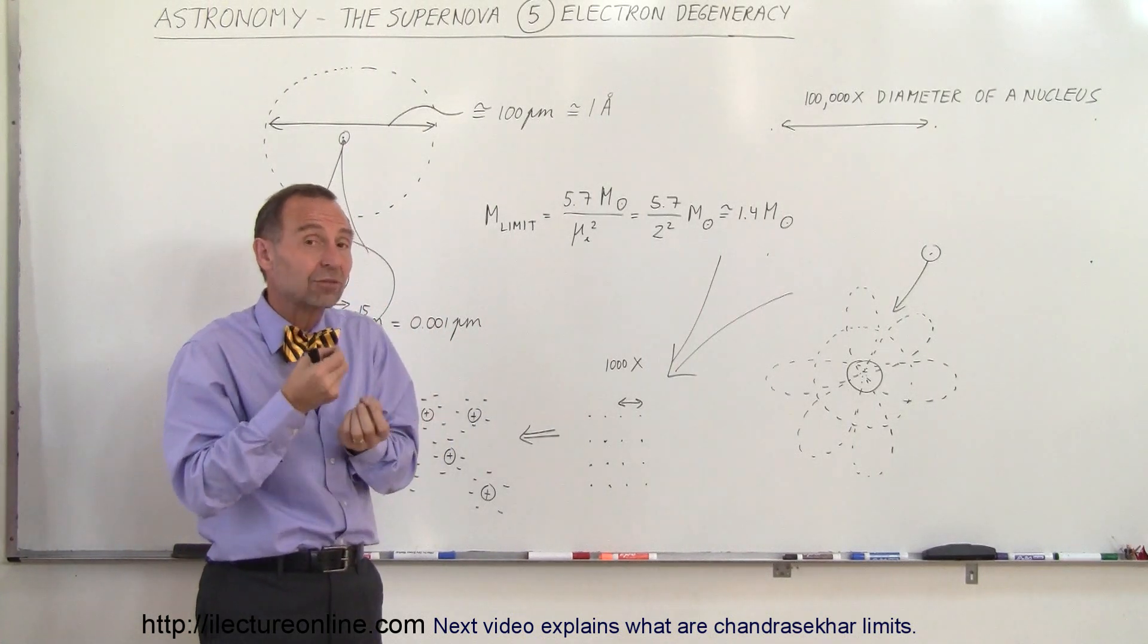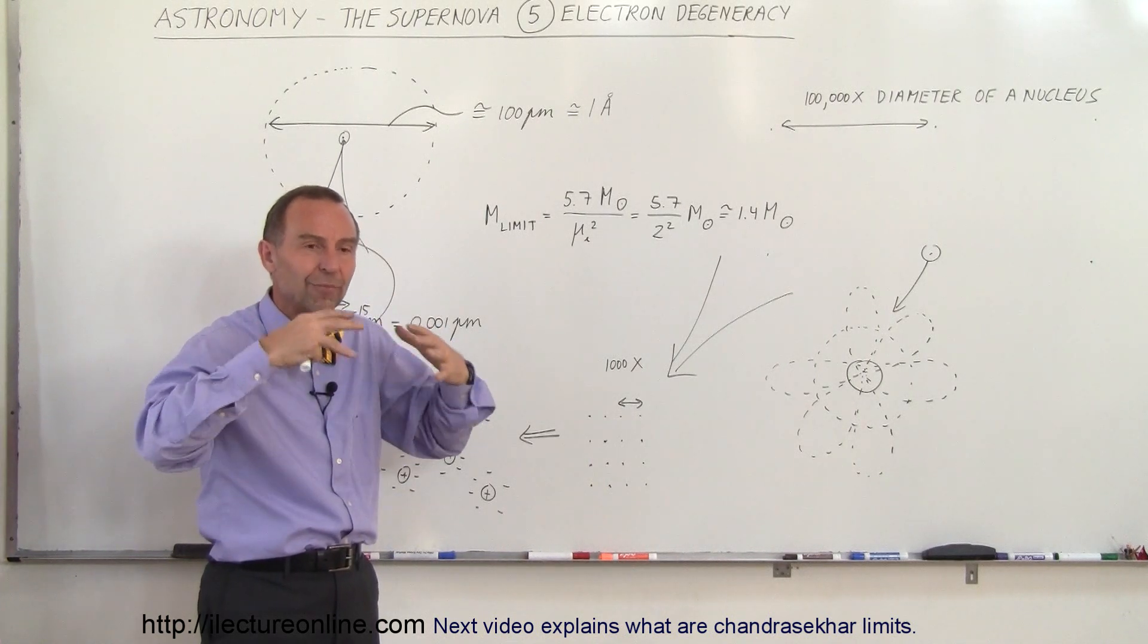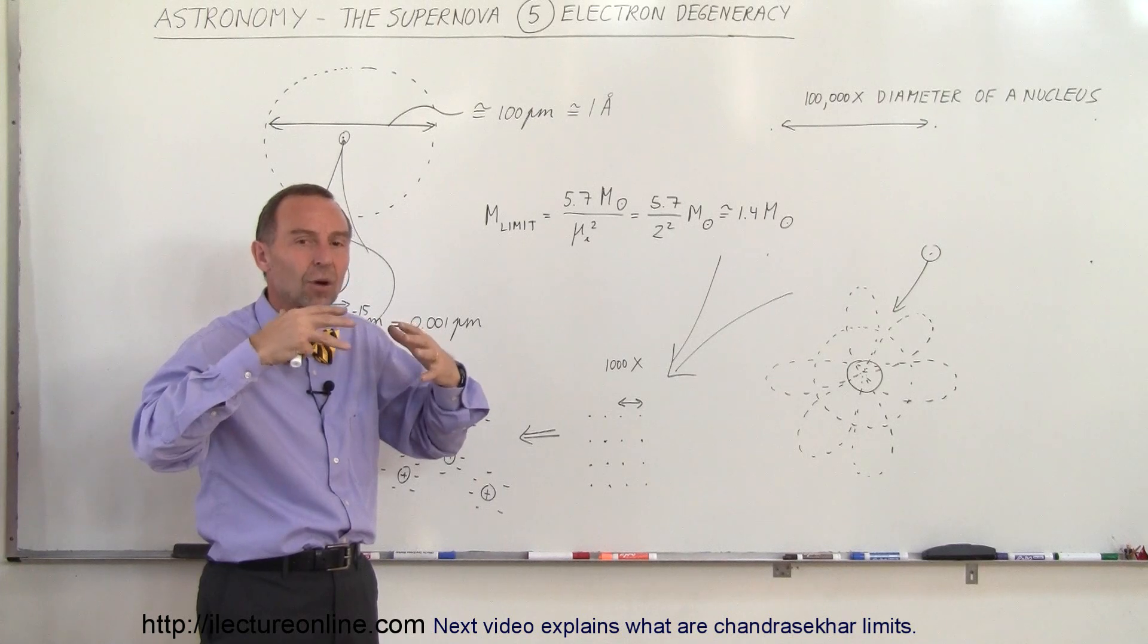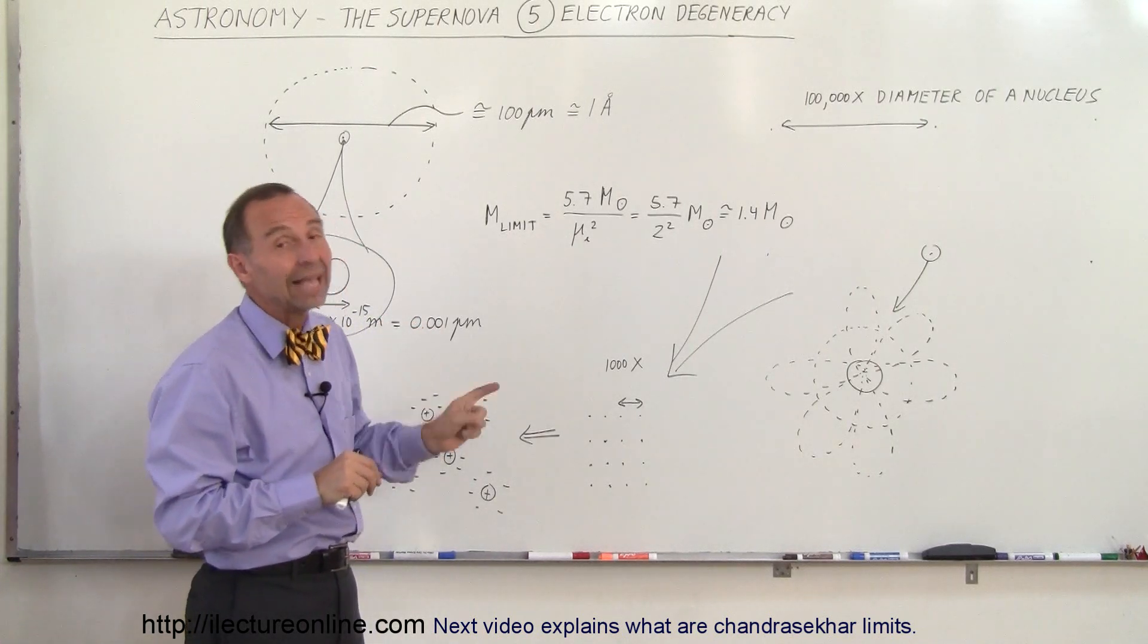If it wasn't for the fact that electrons moved at relativistic speeds, the size of the white dwarf would fairly well maintain a size where the electron degeneracy could hold back the gravitational pressure. But that's not the case in reality.